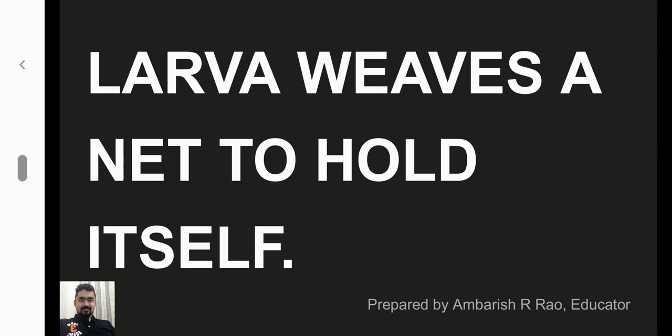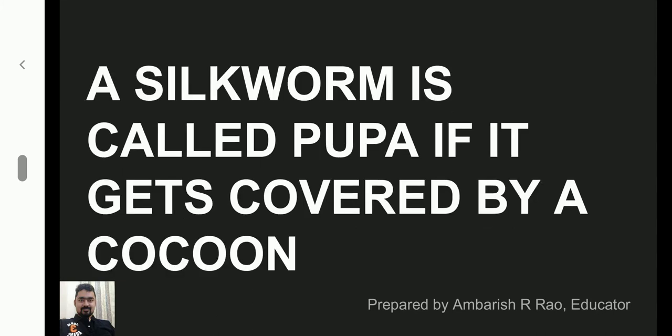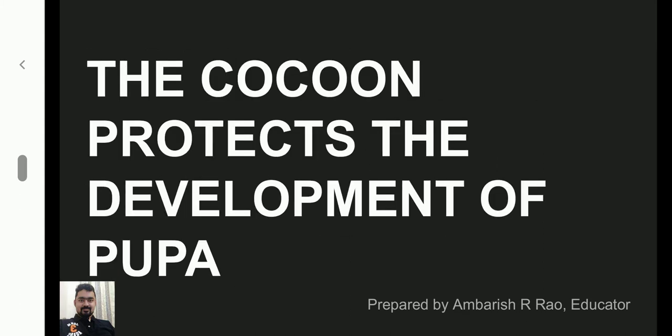The larva weaves a net to hold itself. Then the caterpillar becomes a pupa. A silkworm is called a pupa when it gets covered completely by a cocoon. The hard shell of silk fibers spun around the pupa is called a cocoon, which protects the development of the pupa.